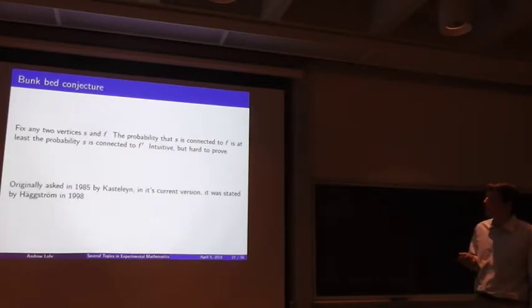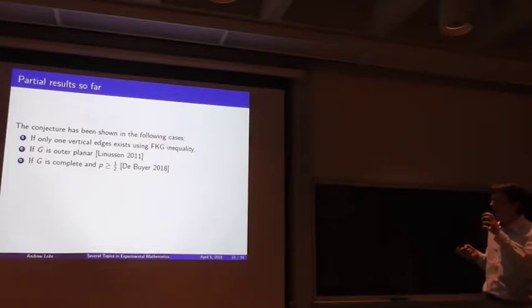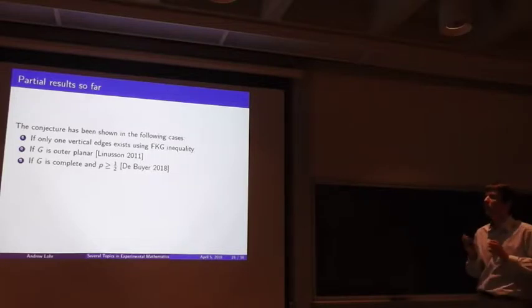So originally in 1985, in its current form, it was a very nascent conjecture there. If only one vertical edge, we use FKG. That's because saying that edges are definitely going to happen on one side, and those two things are definitely connected on one side, is a monotone property. So it falls nicely into this class of correlation inequalities.